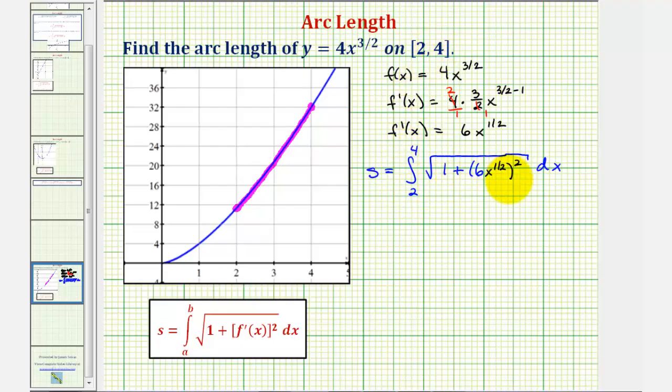Let's go ahead and simplify this. We'd have 1 plus 6 to the 1 half squared would be just 36x. Notice 1 half times 2 is 1, giving us x to the first.